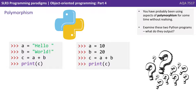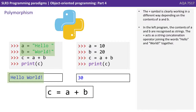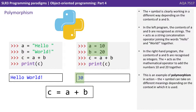You've probably been using aspects of polymorphism for some time without even realising. Examine these two Python programs — what do they both output? The plus symbol is clearly working in a different way depending on the contents of A and B. In the left program, the contents of A and B are recognised as strings, so the plus acts as a string concatenation operator joining the words hello and world together. In the right-hand program, the contents of A and B are recognised as integers, so the plus acts as the mathematical operator to add the numbers 10 and 20 together. This is an example of polymorphism in action — the plus symbol can take on different meanings depending on the context in which it is used.